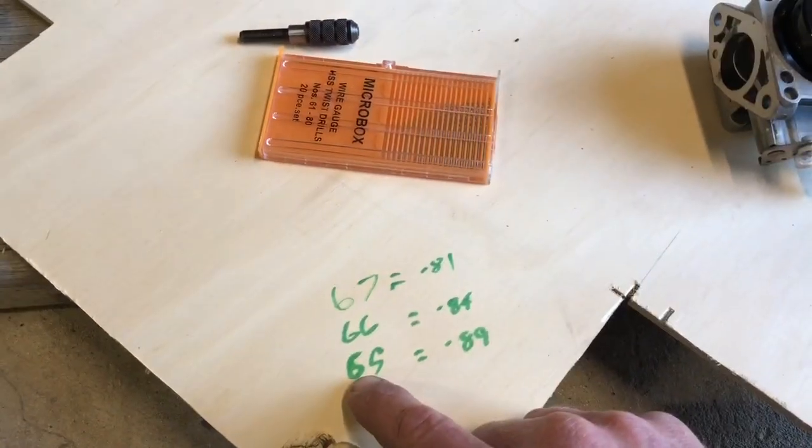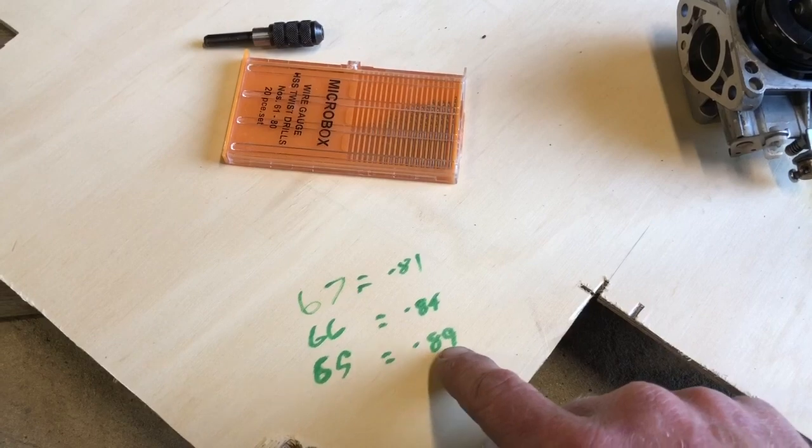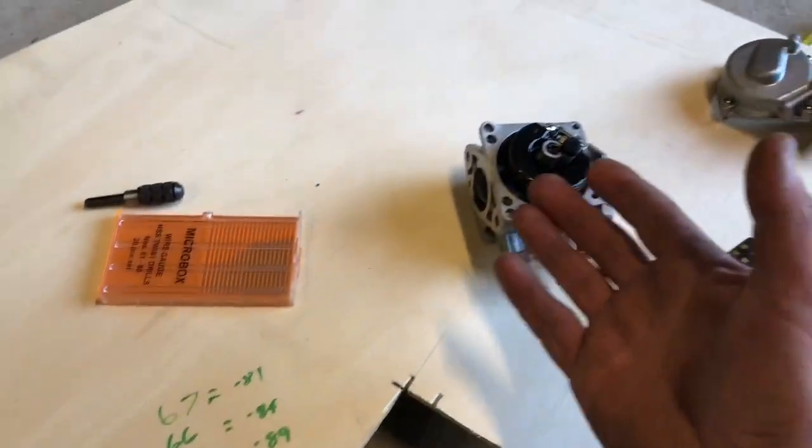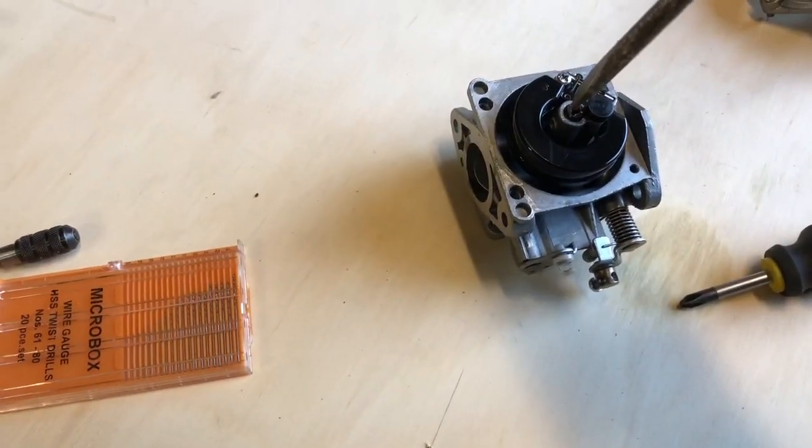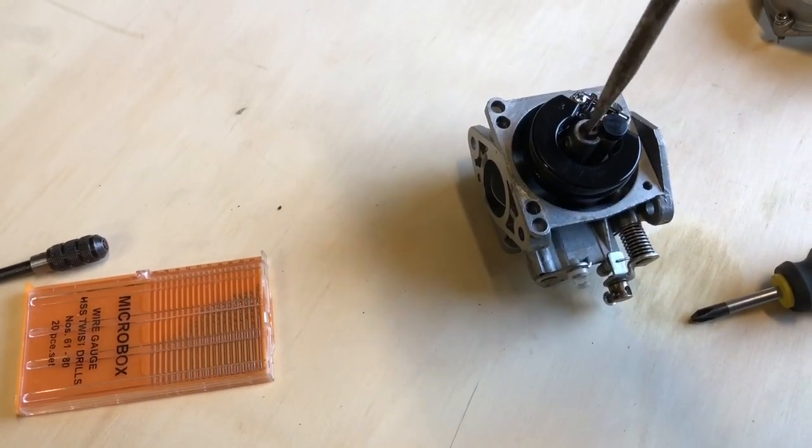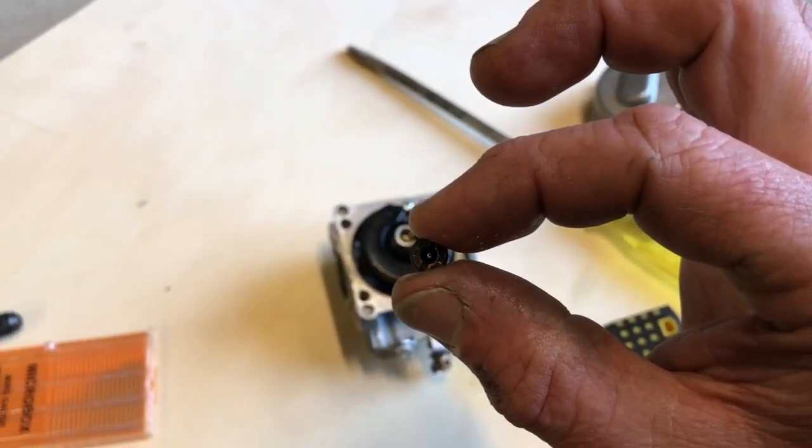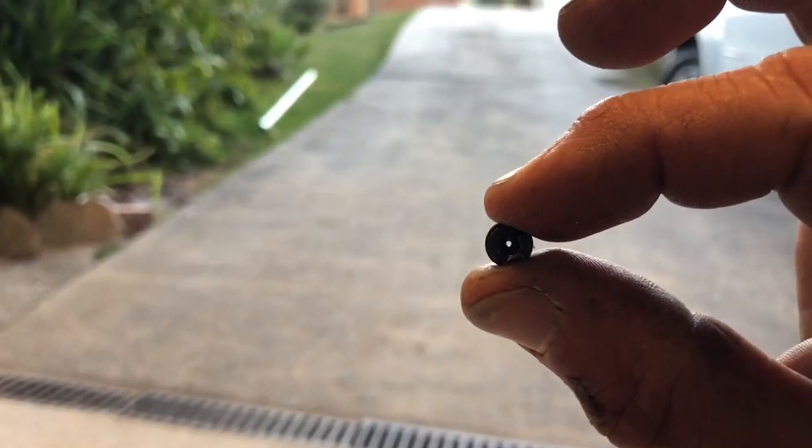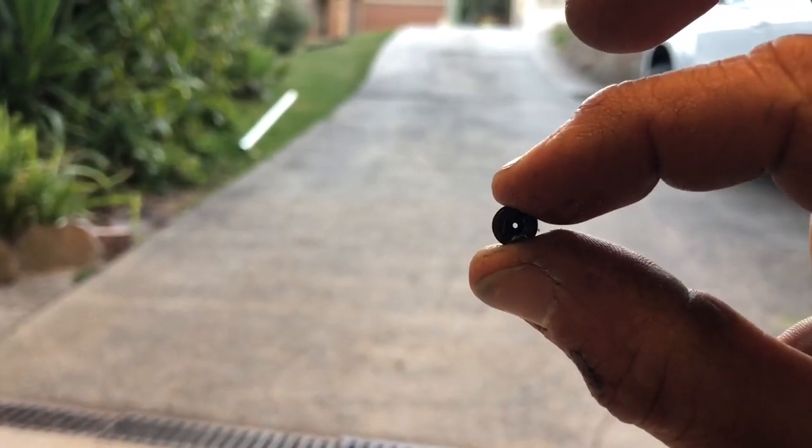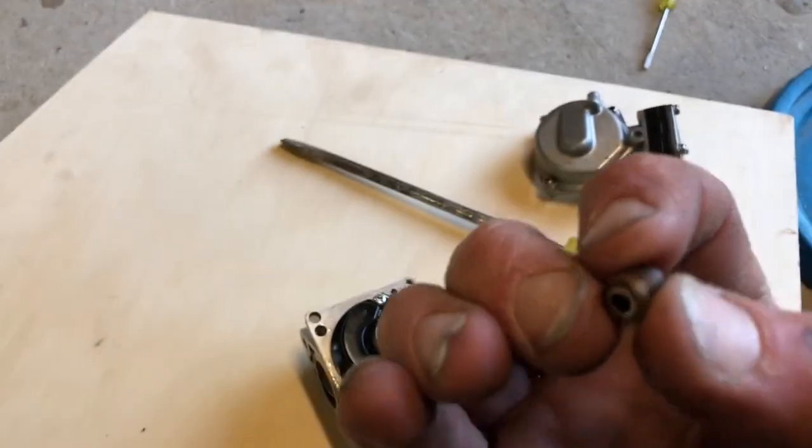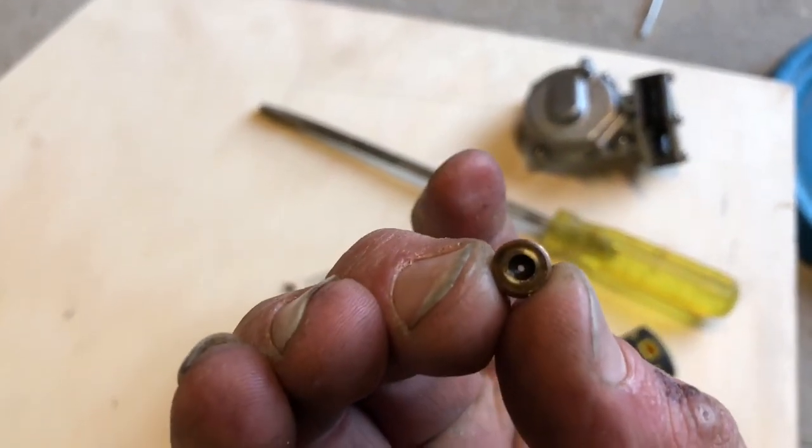So I'm going to drill it out to a number drill 65, which is a 0.89 millimeter, and then obviously have to re-test the motor and read the spark plug again and see how that goes. So yeah, that's the moment that is a 0.84 millimeter jet.